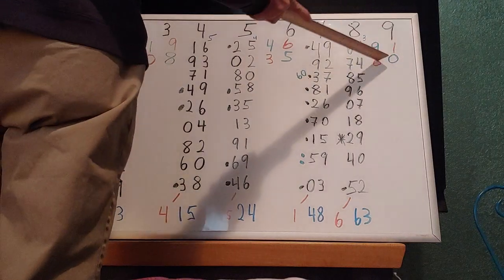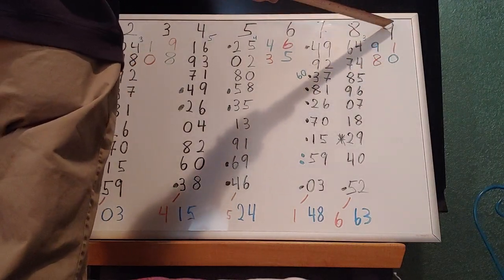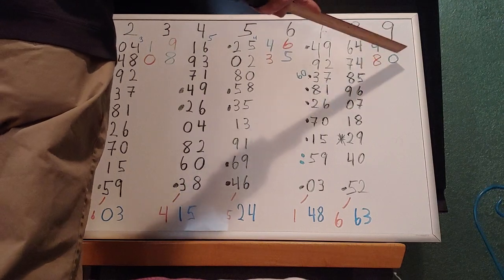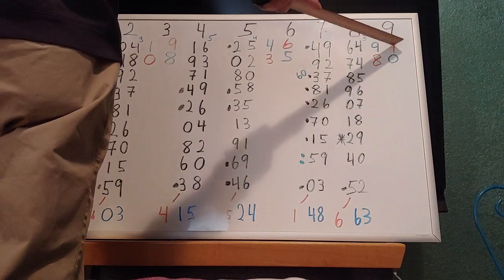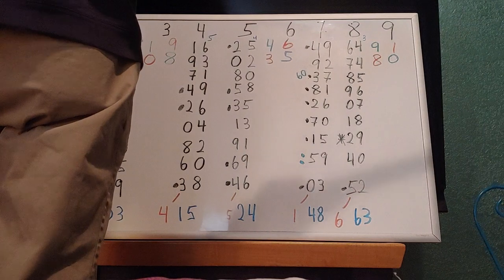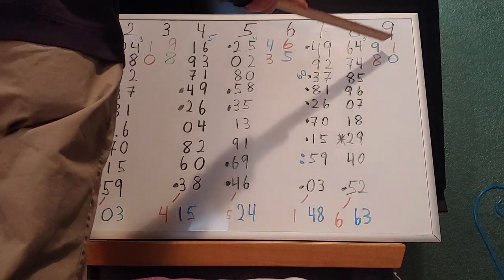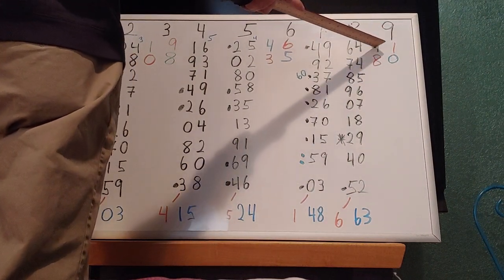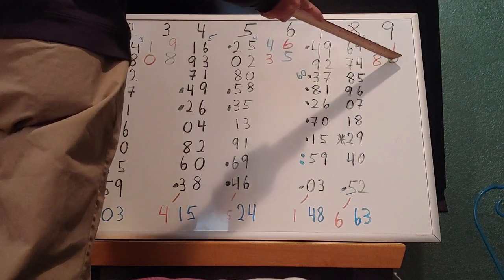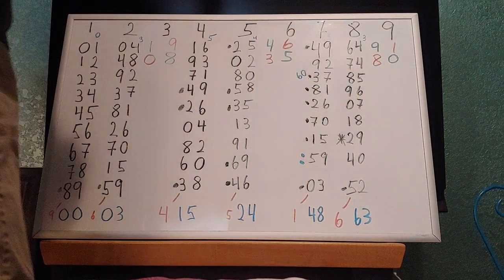9 squared is 81. 99 squared is 9801. 999 squared is 998001. 100 nines squared — always one less than however many of them — gives 99 eights, 1, 8, 99 zeros, 1, continuing to 9 to infinity.